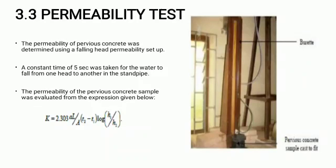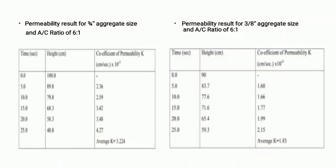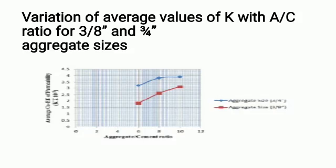The second test is the permeability test. The falling head method is used for finding permeability because discharge is low. We can find permeability by using the expression shown in the slide. From the table we can see that permeability is higher for larger size aggregate. From the graph we can see that the permeability of concrete made with aggregate having size 3/4 inch is almost double that of concrete made with aggregate having size 3/8 inch.